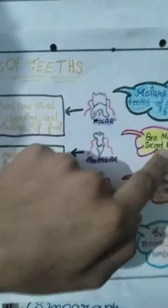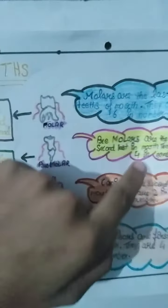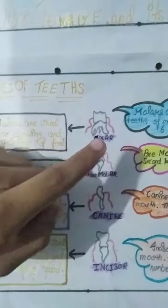Premolars are the second last in the mouth. They are four in number. Premolars are used for chewing of food. Molars are the last teeth of the mouth.